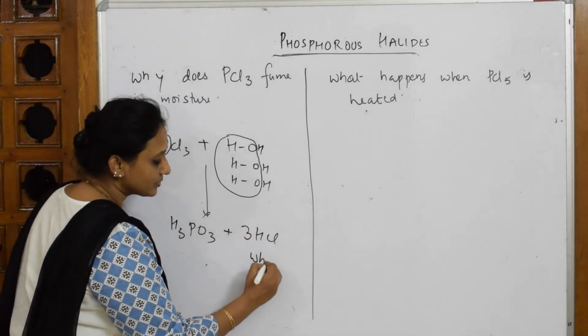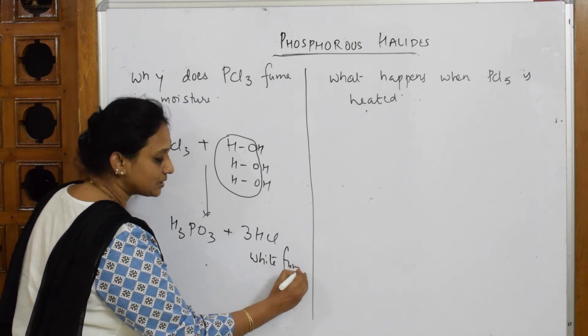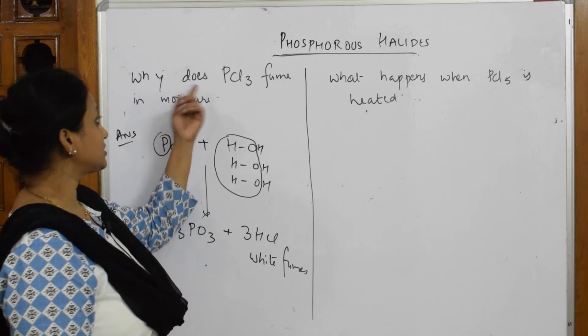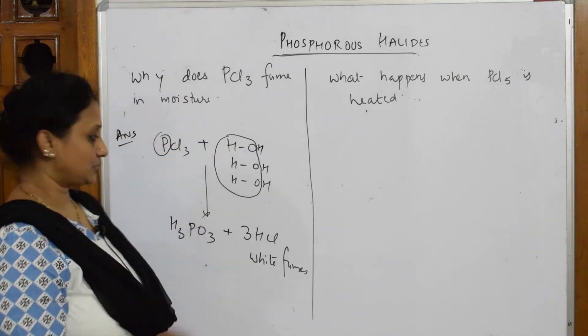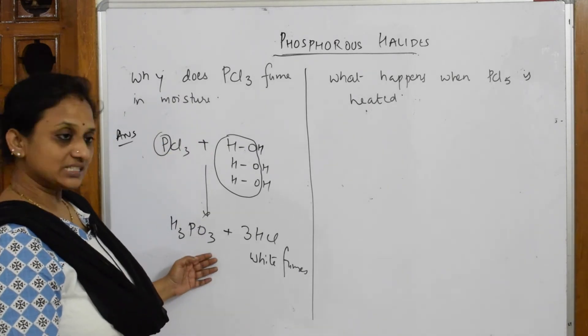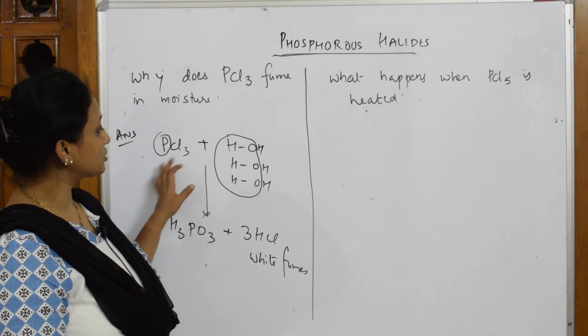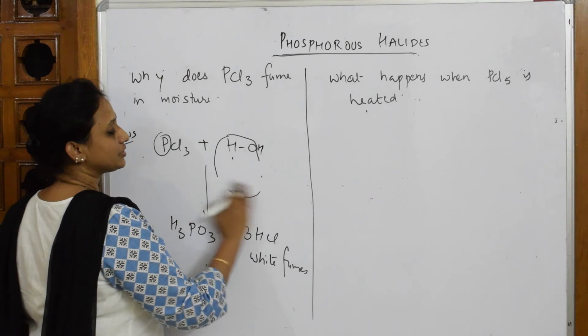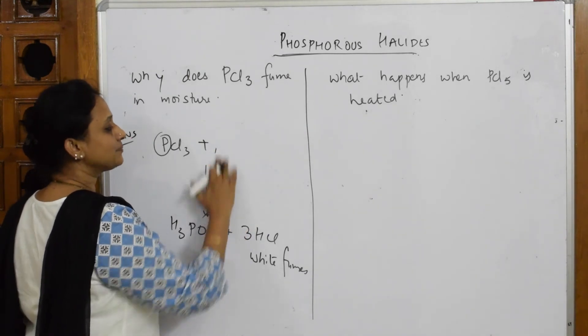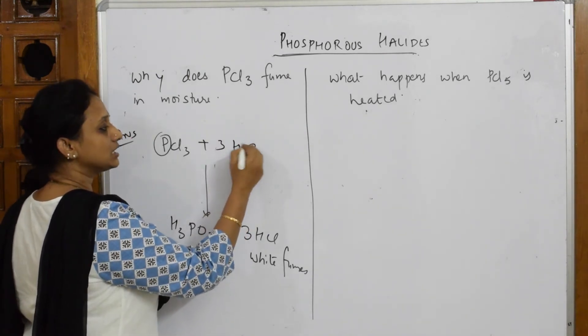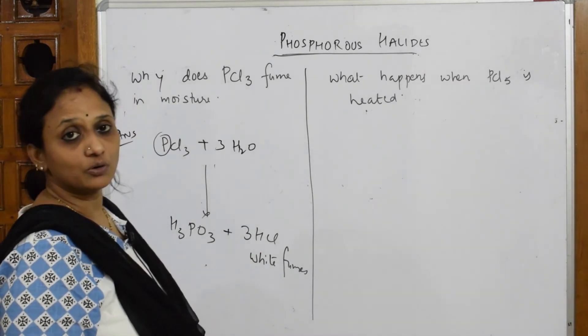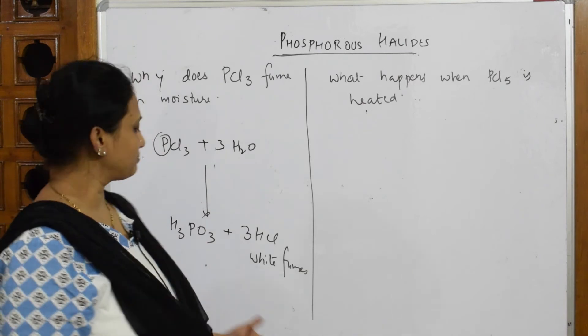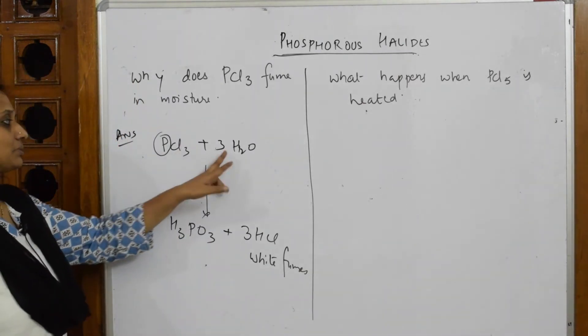Now this is your white fumes, these are the white fumes which appear because of the formation or release of HCl. Phosphorus fumes in moisture. You have to write that the reason is when phosphorus comes in contact with water, that is your three moles, it's going to evolve HCl vapors. Because of this formation, PCl3 fumes in moisture.